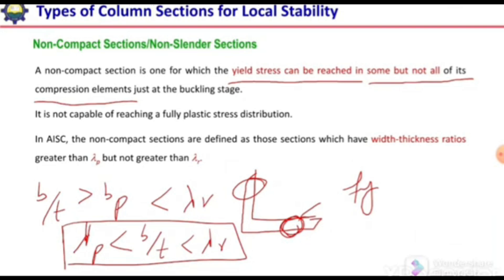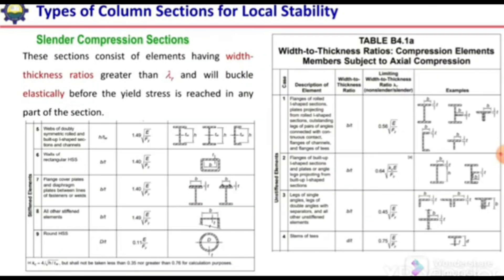Comparing with overall column behavior: a compact section is similar to a short column, where yielding occurs throughout the entire section. In the case of a non-compact section, some part will be yielding and some part will not — comparable to an intermediate column where the column buckles but some portion of the section yields.